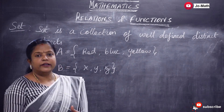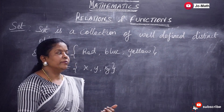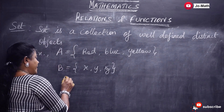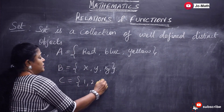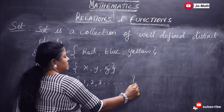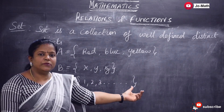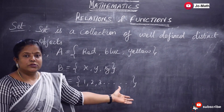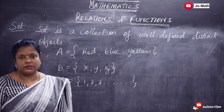And then infinite set. If the set has an uncountable number of elements, then we say it is an infinite set. For example, one, two, three, etcetera — this is nothing but the set of all natural numbers, which is not countable. So it is said to be an infinite set.